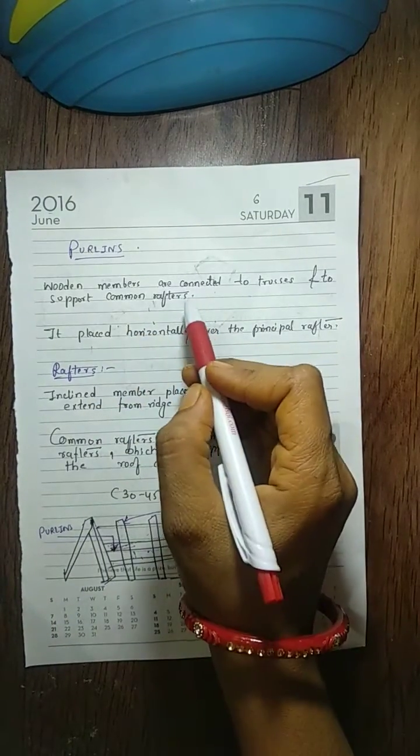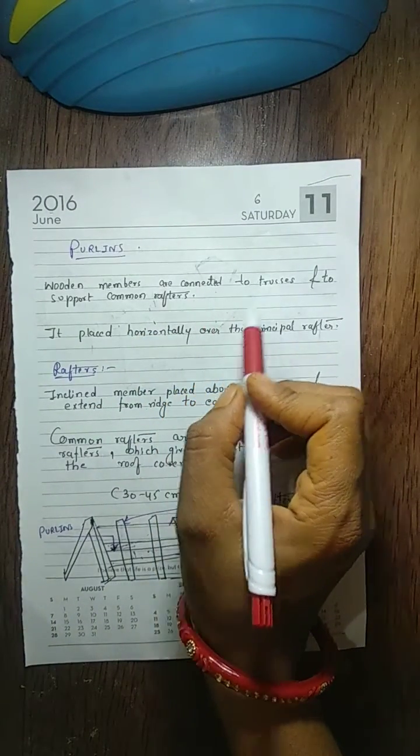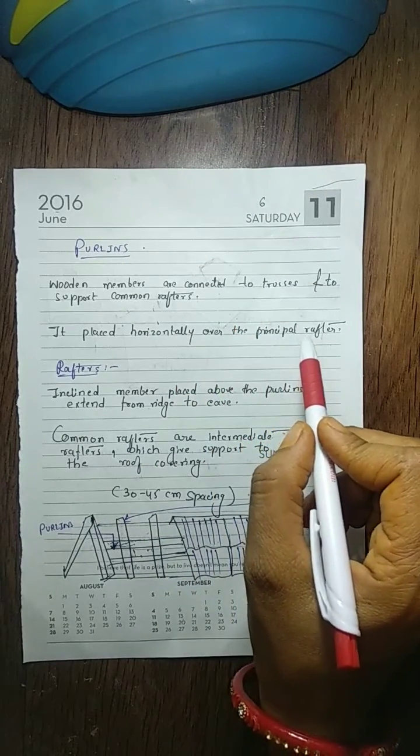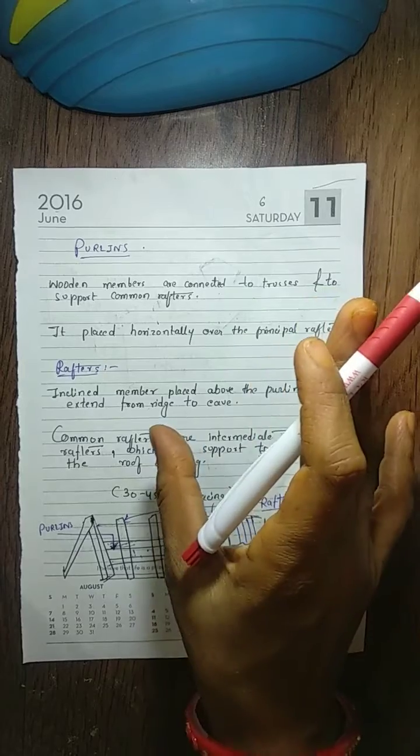Now the next technical term is perlin. Perlin are the wooden members which are connected to the truss or to support the common rafter. It is placed horizontally over the principal rafter. It is simply a wooden member which should be connected to the roof or to support the rafter.